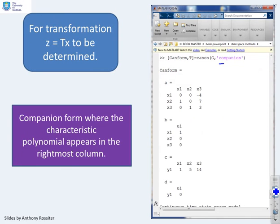I could, with this canon, use a different command, which is companion. If I put it in companion form, you'll see what it's done is it's put the key parameters here on the last column. That's an observable canonical form.